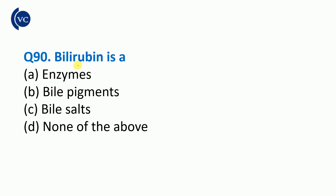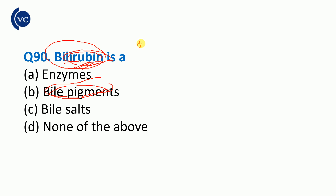Next question: what is bilirubin? Bilirubin is a bile pigment. It is a pigment found in bile in our body, and we can observe the bile pigment bilirubin.